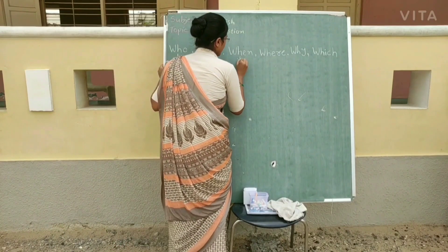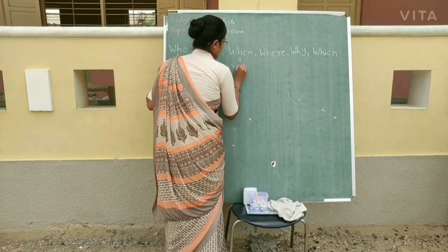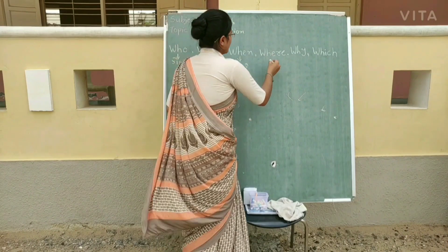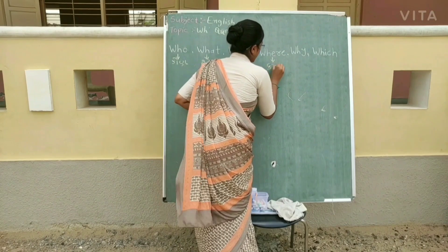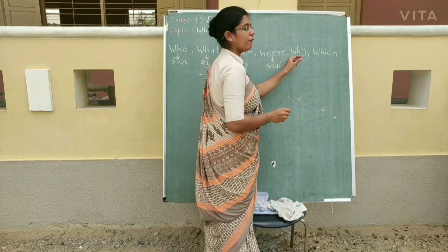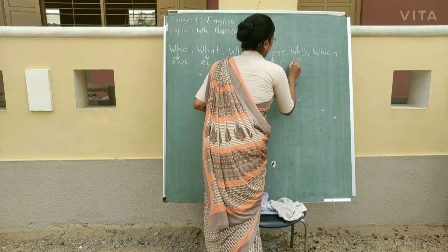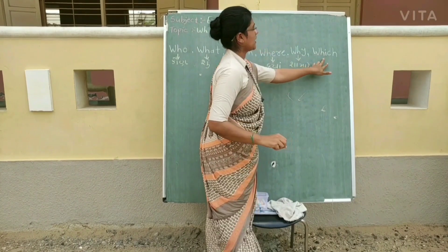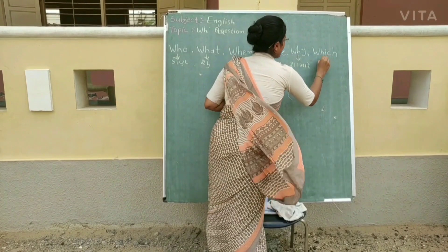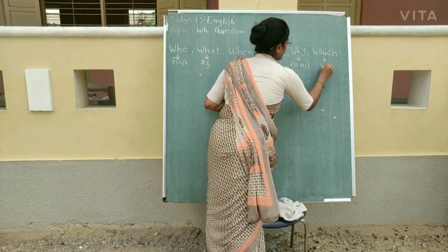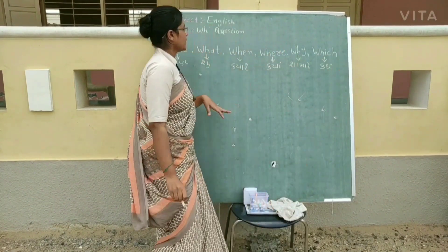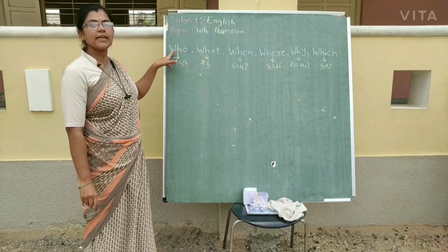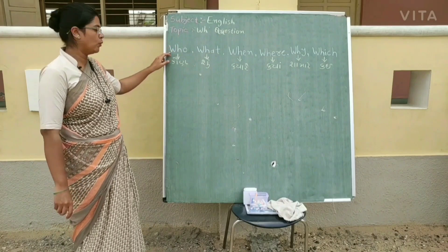When એટલે ક્યારે, Where એટલે ક્યાં, Why એટલે શા માટે, અને Which એટલે કઈ. હવે આપણે step by step, one by one દરેકને સમજીશું. સૌ પ્રથમ આપણે સમજીશું Who.